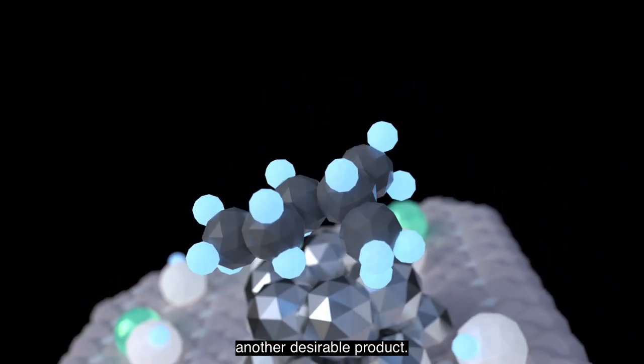Ring formation isn't the only possible outcome. The same olefinic molecule can branch through a protonated cyclopropane mechanism on an acid site. Subsequent hydrogenation yields a saturated 2-methylpentane, another desirable product.